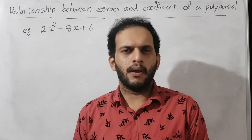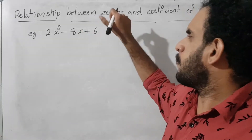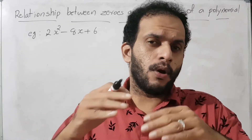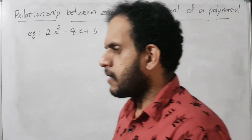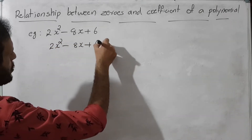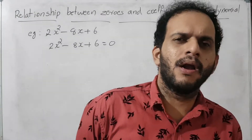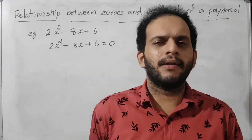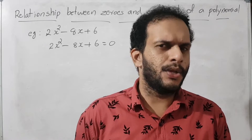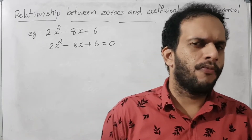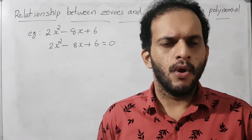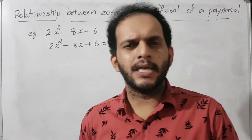Next we need to find the zeros of this polynomial. To find the zeros, we equate the given polynomial to zero: 2x² minus 8x plus 6 equals 0. Since this is a quadratic polynomial, we factorize it using the splitting middle term method.